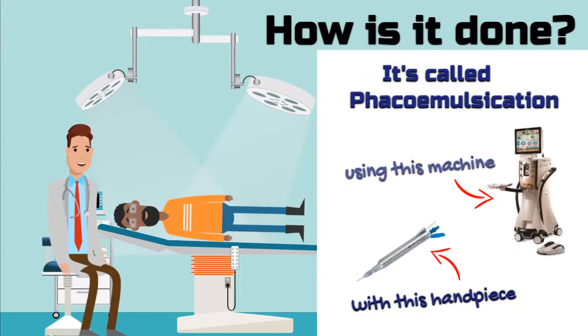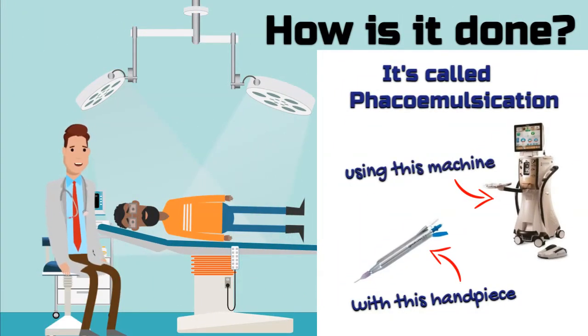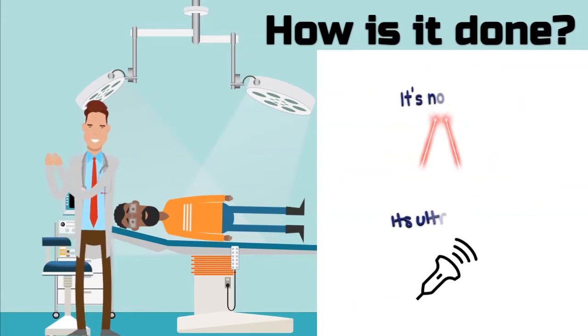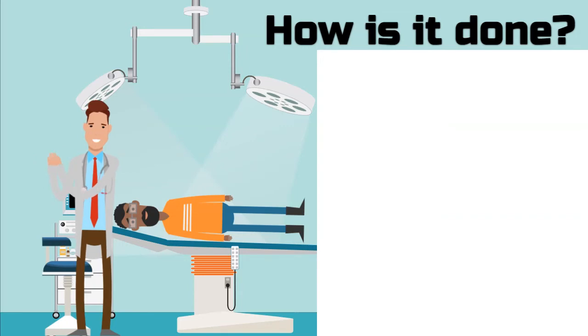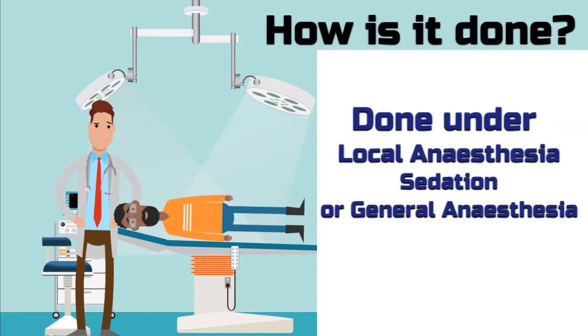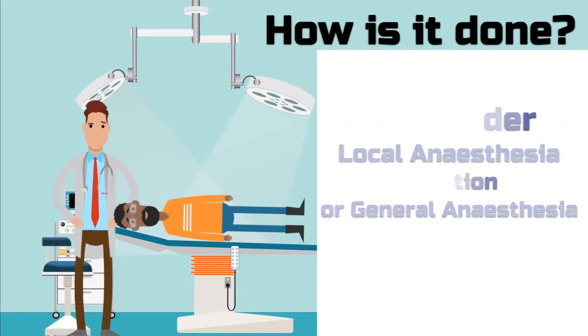So how is cataract done? It's called phacoemulsification. It's not laser. It's a type of ultrasound which acts like a jackhammer. It can be done under local anesthesia, sedation or general anesthesia.